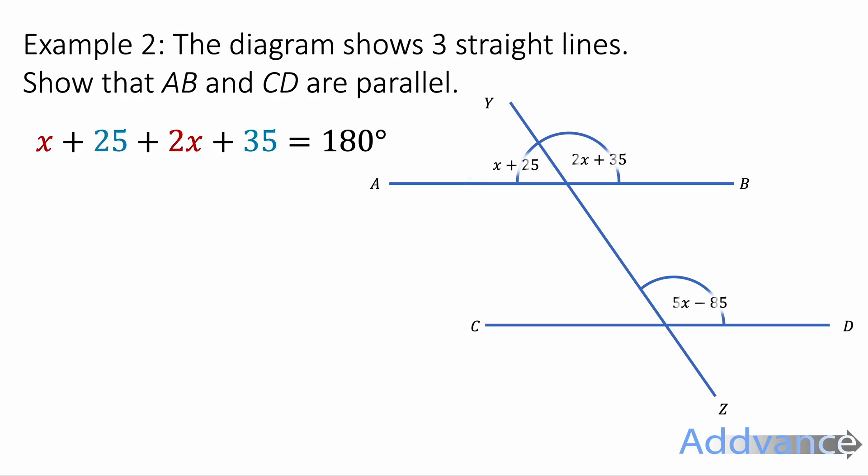OK, now we're going to simplify. So we combine the x's. x and 2x make 3x. 25 and 35 make 60. We take 60 off both sides. We get 3x equals 120. Divide by 3, divide by 3. We get x equals 40.